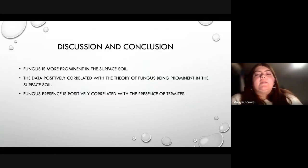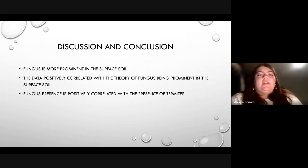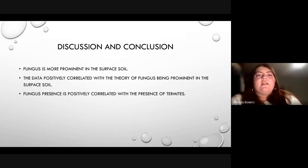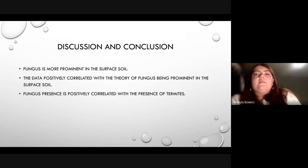Drawing conclusions from this data, the fungus is more prominent in the surface soil samples in relation to the presence of reticular termites. The data positively correlated with my hypothesis of fungus being prominent in the surface soil, due to the decay in plant material. Fungus presence is positively correlated with the presence of termites, as each of the sample sites had active termites in the area, indicating that the fungus was not of any danger to the termite colony. Previous studies have theorized that interactions among fungi may suppress pathogenic effects and promote termite survival. Termites often ingest materials present in their nests containing fungus, such as wood rot, which alters the termite's behavior and physiological makeup.